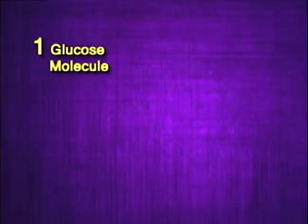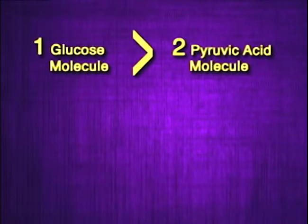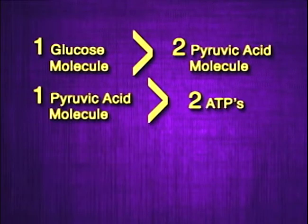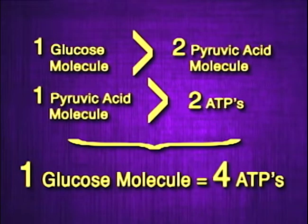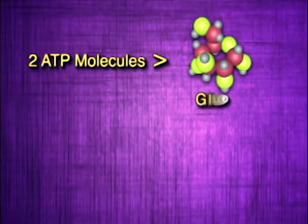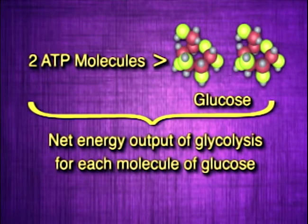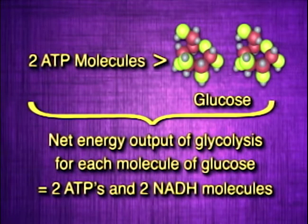Let me describe to you how carbohydrates, our primary energy source, are used to produce energy during cellular respiration. If one glucose molecule produces two pyruvic acid molecules, and one pyruvic acid molecule forms two ATPs, then one glucose molecule comes with four ATPs. But two ATP molecules were used to split glucose. The net energy output of glycolysis for each molecule of glucose is two ATPs and two NADH molecules.